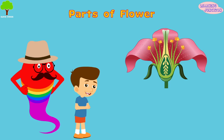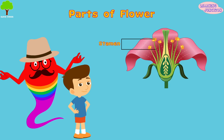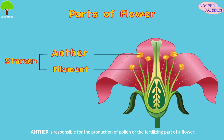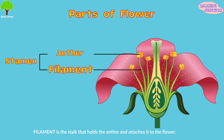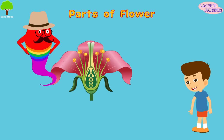Receptacle: it is the thickened part at the bottom which holds the major organs. Stamen is the male organ of the flower, consisting of two parts. Anther is responsible for the production of pollen, the fertilizing part of a flower.